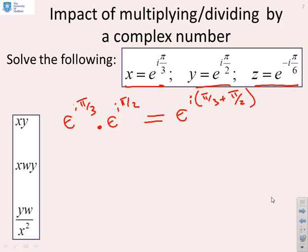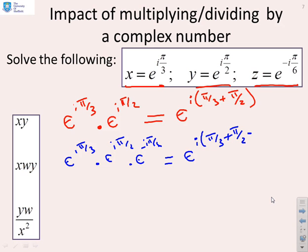What about xyz? Well, you get e to the i pi by 3 times e to the i pi by 2 times e to the minus i pi by 6. And that's going to give you e to the i into pi by 3 plus pi by 2 minus pi by 6. And I've just noticed a silly mistake here. That shouldn't say z. That should say w, obviously. Otherwise we can't do it.